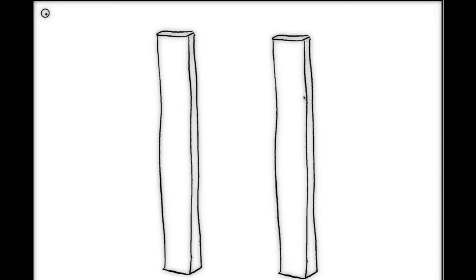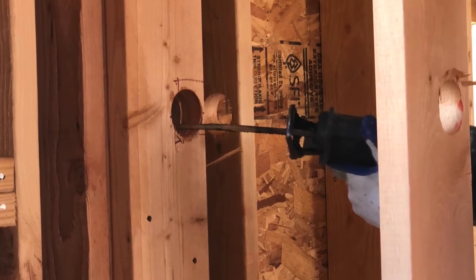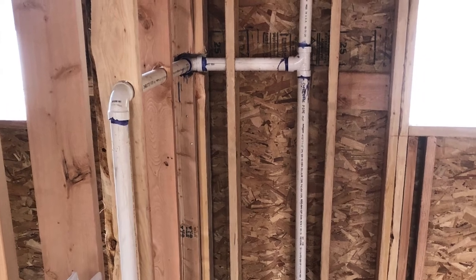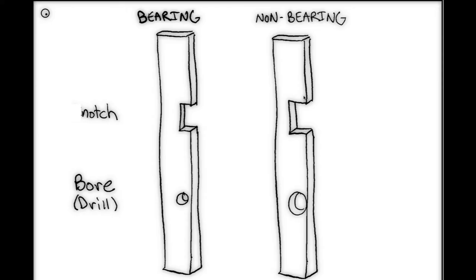Building codes will only allow for us to drill or notch through bearing and non-bearing studs for a certain amount. Notching is where you take a sawzall and chop into the side and actually cut out a section of the pipe. In this situation I needed to turn a corner so I drilled a hole, but ended up notching it so that I could fit my fitting back inside the studs. The better option is to bore or drill a hole through the stud because that leaves more strength.